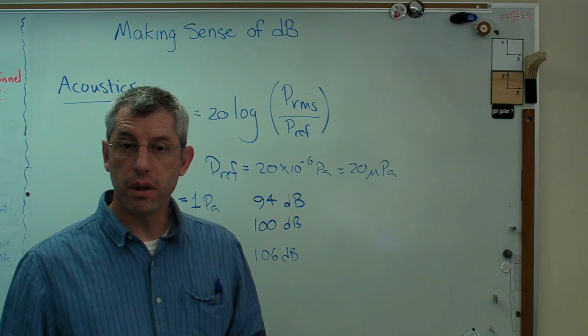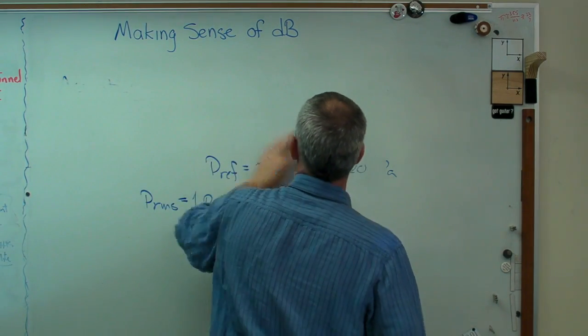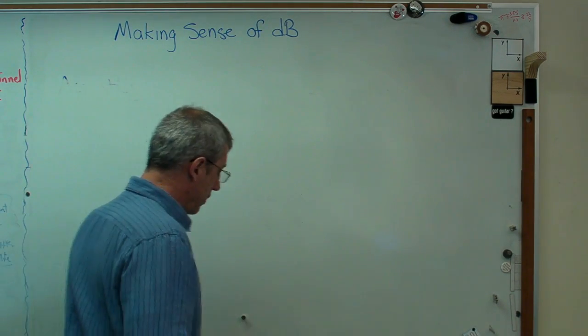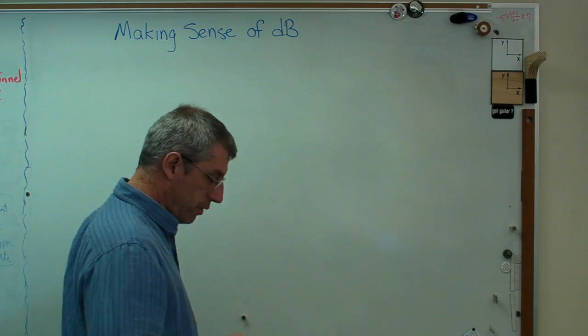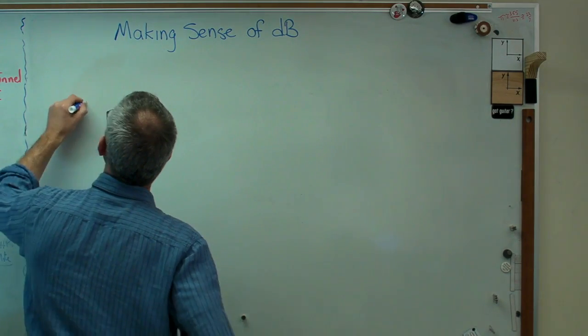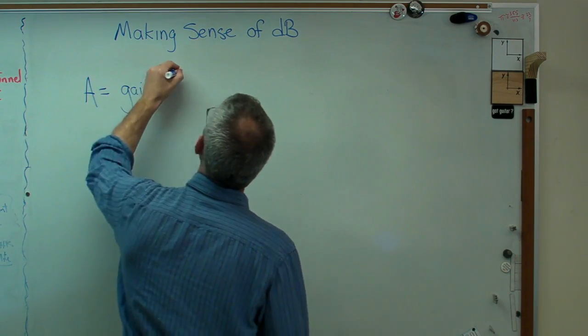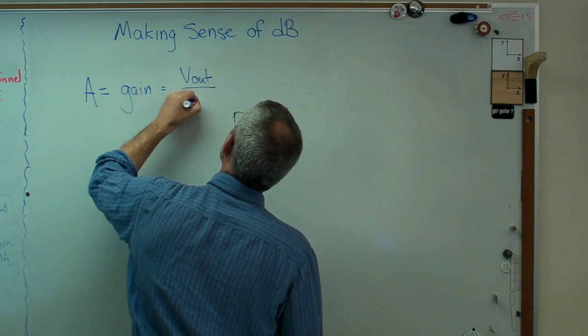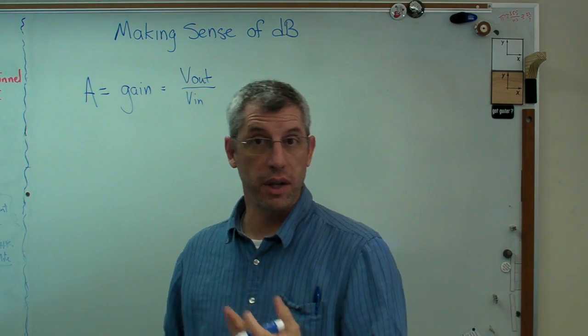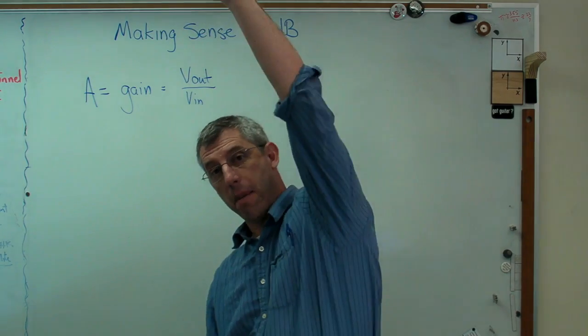Now, you see decibels a lot in other parts of the electronics world. Another place you see it a lot is gain. Gain is, if you go through an amplifier, gain is the number by which the input signal gets multiplied to be the output signal. So it's usually expressed as A. I don't know why, but there's only 26 letters. You've got to use one of them. Somebody picked A, and that's what we'll use. So that might be V out over V in. If I have an amplifier with a gain of 100, it means I put a signal in. A signal is just a voltage that has information encoded in it. I'll put a signal in that's this big, and it comes out this big.